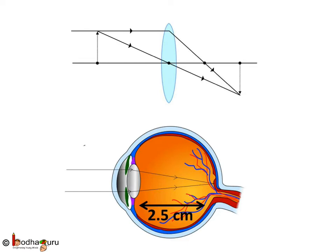Hence, for us to see things, the distance between the lens and the image always has to be 2.5 cm. Now, you may wonder, how come the change in position of objects does not affect where the image is formed, that is, on retina only?